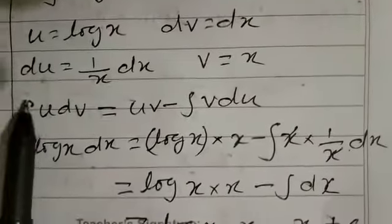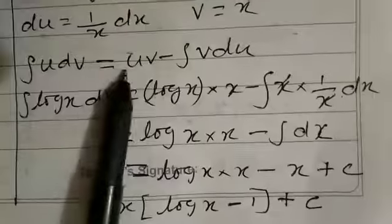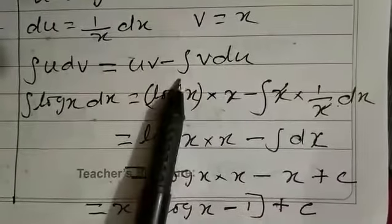Then we have to write that formula. Integration of u dv equal to uv minus integration of v du.